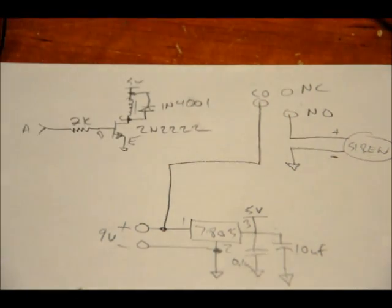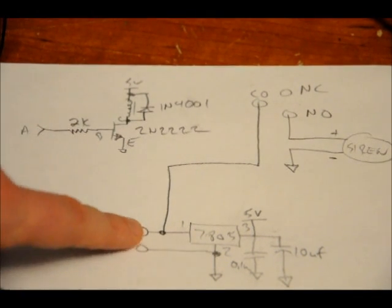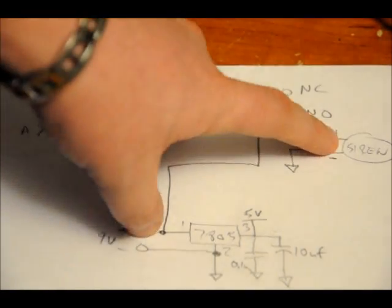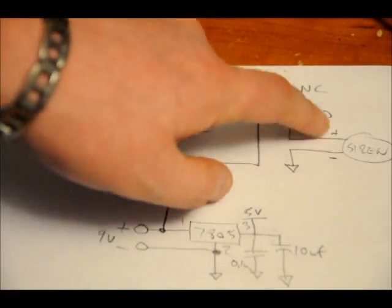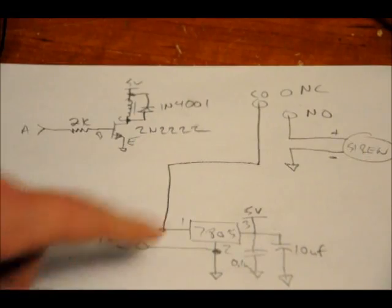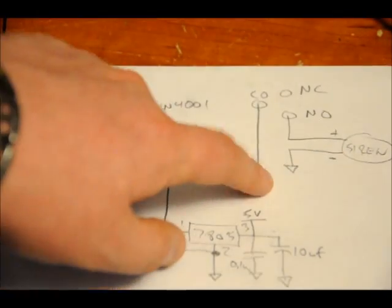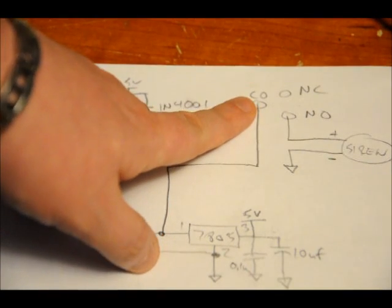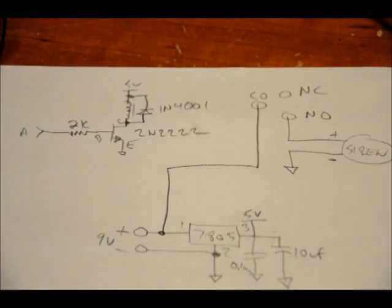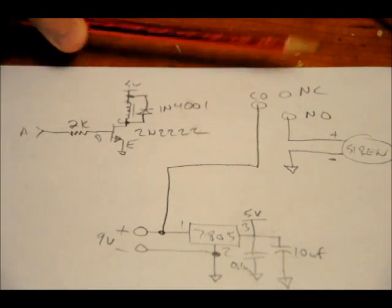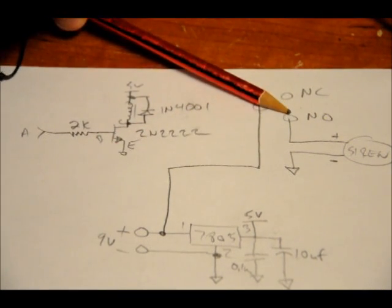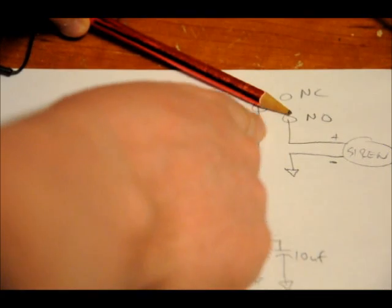In this case, I've put 9 volts on the common pin and connected the normally open pin to the positive wire of the siren. I've connected the negative wire of the siren to DC ground. So basically, when the relay switches on, it completes the circuit, providing 9 volts all the way through the relay, through the siren to ground.